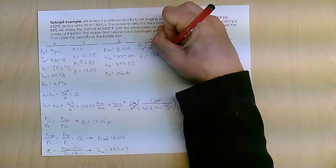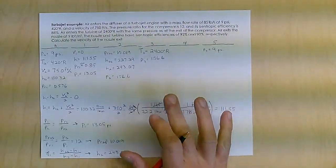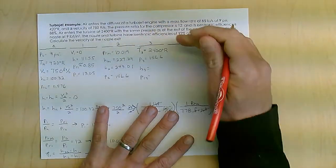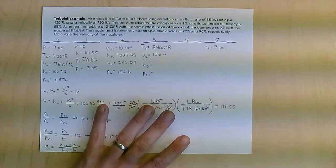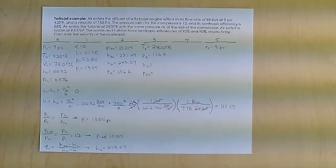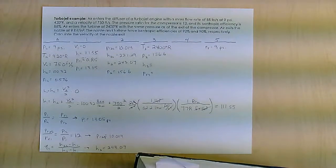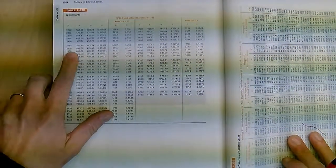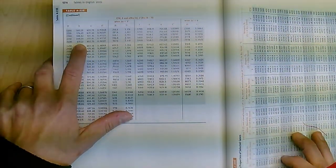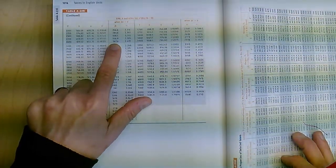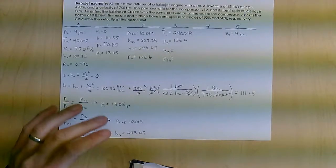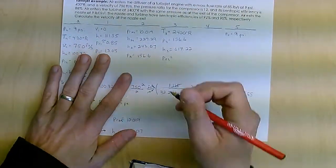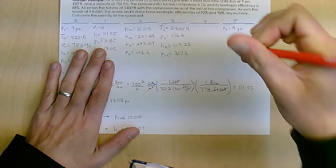Now, I know temperature 3, so I'm going to go ahead and look up H3, and I'm going to need PR3 because then I go into the turbine, and that's going to help me figure out what's going on with the turbine there. Well, we'll talk about the turbine in a second, but let me go ahead and look up these values. So for 2,400 degrees Rankine, I'm way over here, 2,400, I get H of 617.22 and a PR of 367.6. So I get 617.22, and I get a 367.6.